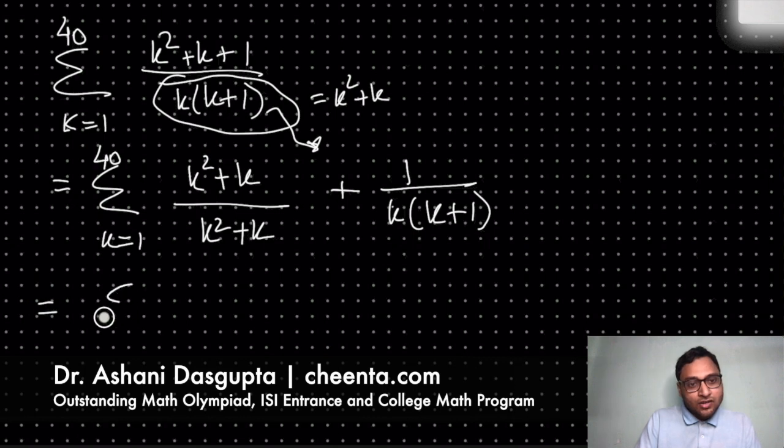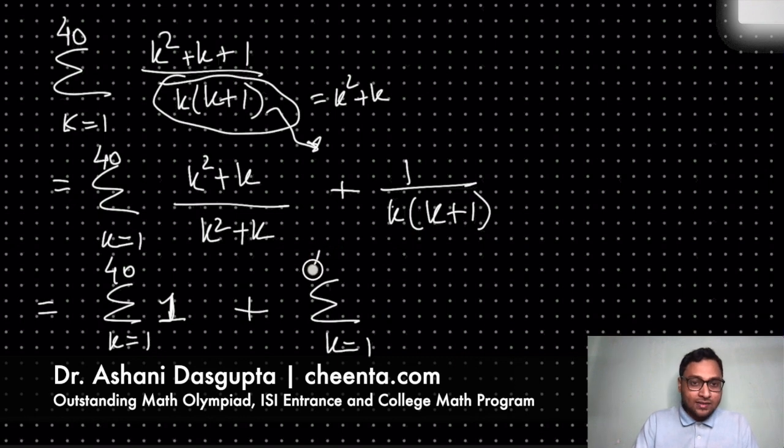So summation of k equal to 1 to 40, this is 1 plus, I can split the summation now because I can separately add up the 1s, 1 over k into (k+1). Great.